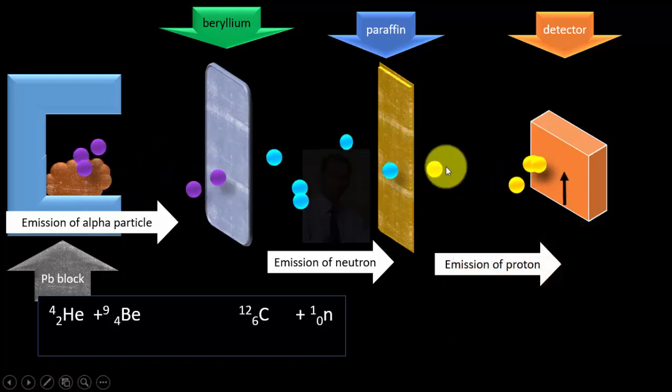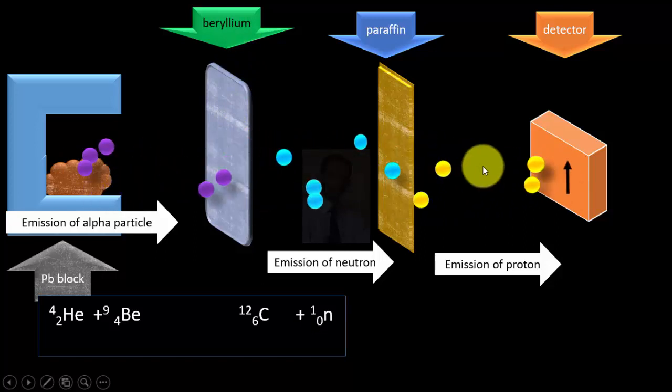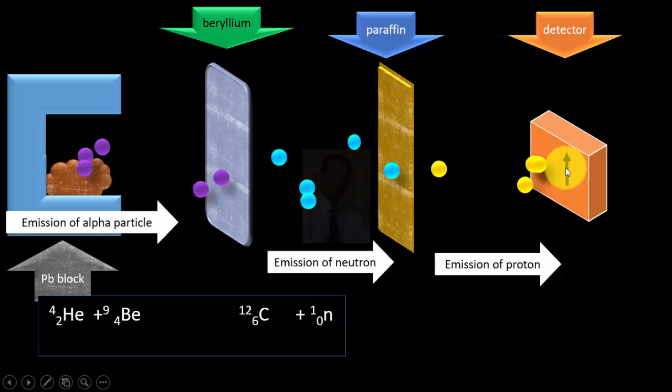And detector in front showed deflection which means some radiations were coming onto it. But we already know that radiations coming from beryllium material were chargeless, so how could we get radiations over here with the charges? Actually, these protons were coming from paraffin material.